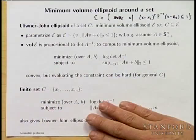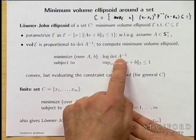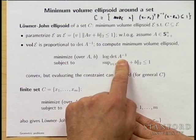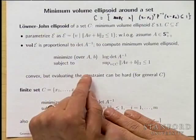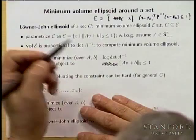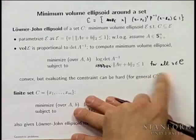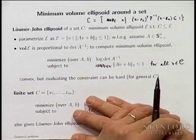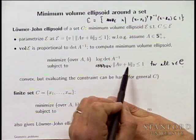If C is a finite set of points — for example a bunch of vertices — this is just a finite set of convex norm constraints, and you have a convex problem. So you've just learned something non-obvious: if someone gives you a polyhedron defined by its vertices, computing the minimum volume ellipsoid that covers those points is a completely tractable problem.